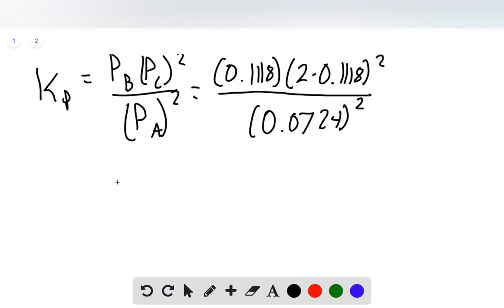And we want to square that as well. And when we do this, we find out that our KP is 1.07. And that's our final answer.